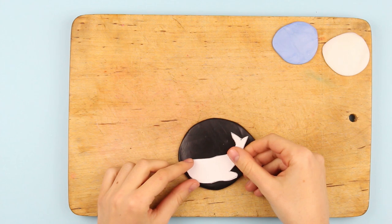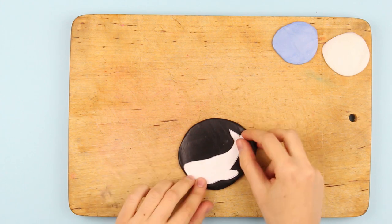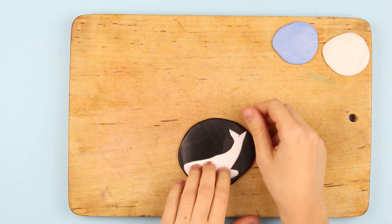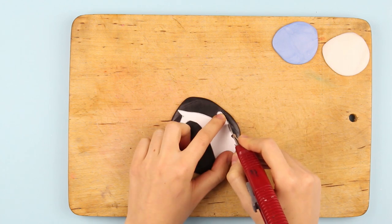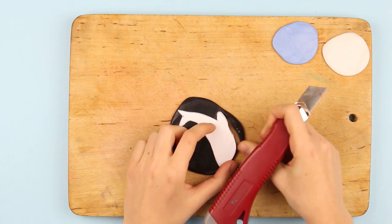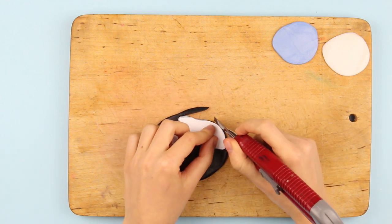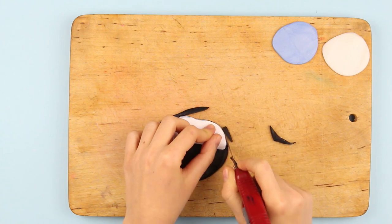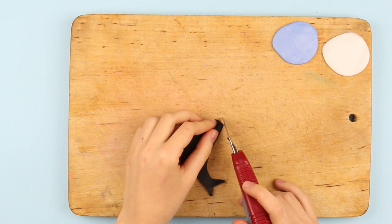Place the pattern on top and press down a bit. Cut out the outline with a craft knife. Remove the pattern. Define the shape.